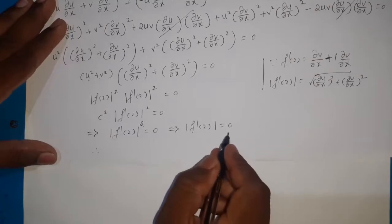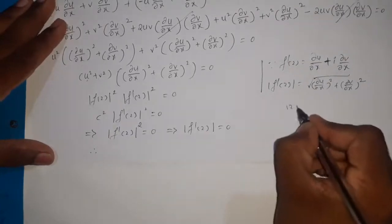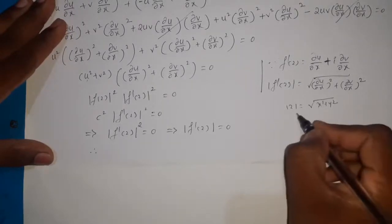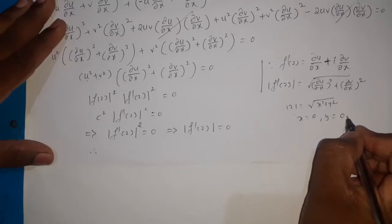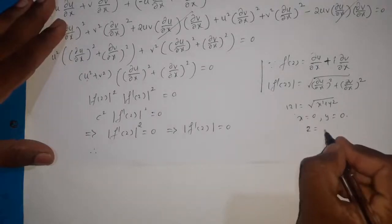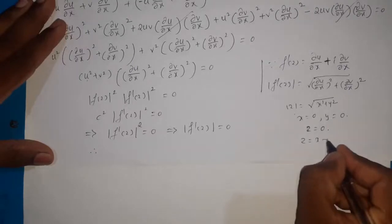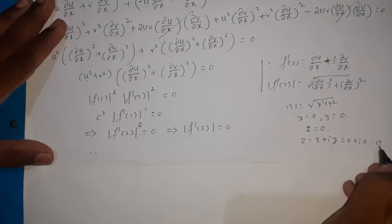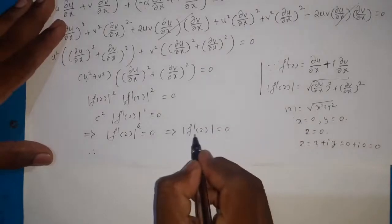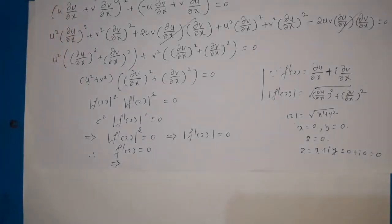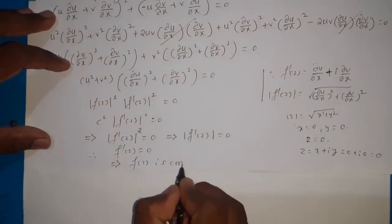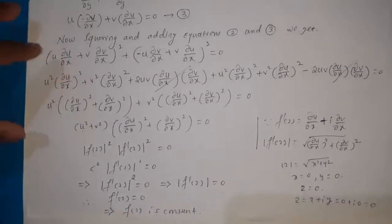If |f'(z)|² = 0, then |f'(z)| = 0, which means f'(z) = 0. Just as |z| = 0 implies z = 0 (since x = 0 and y = 0), here f'(z) = 0. Since the derivative of a function is zero only when the function is constant, it implies f(z) is constant. Hence, we have proved that f(z) is constant when its modulus is constant.